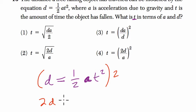So 2d, 2 times the half is 1, so it's 1a t squared, or just a times t squared.